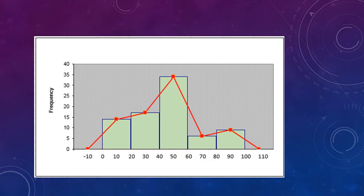Now, I think the easiest way to think about the resulting picture — the red line — is to always imagine that you're seeing those green boxes there at the same time. In particular, what I want you to notice is the very peak of our red line up there at 50 does not mean that there are 35 observations that equal 50. It means that there are 35 observations that would fall in the box somewhere between 40 and 60. You've got to remember that the midpoints of the line are what are indicated by the dots — they represent an entire range, but they're only showing you one value, the value of the midpoint.